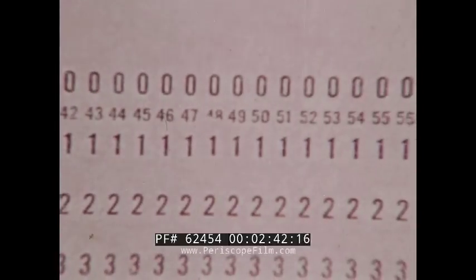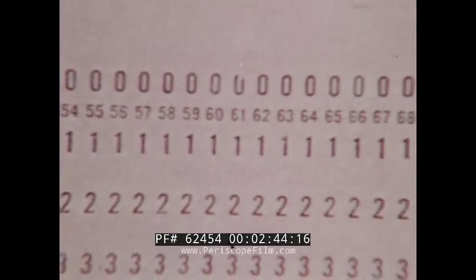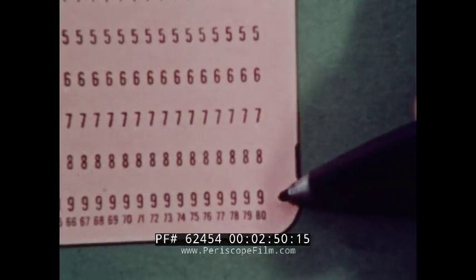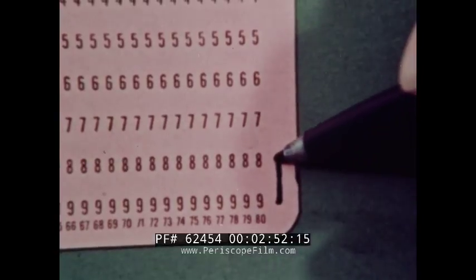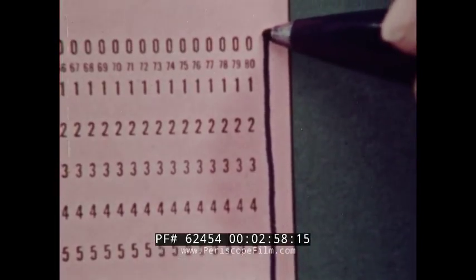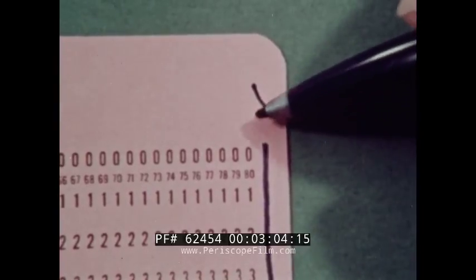There are 80 columns across the card. Each is numbered and they are divided into 12 rows. The bottom row is the ninth and numbering up: 8, 7, 6, 5, 4, 3, 2, 1, and 0. Above this, the 11 or X row, and along the top, the 12th row.